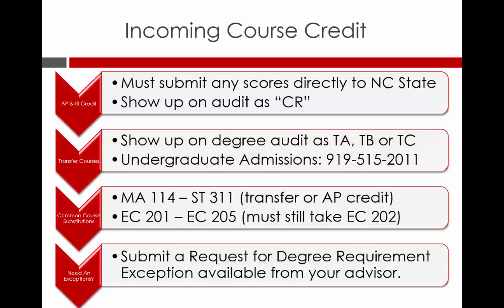You may have looked at your audit and thought that you have taken a course similar to one of our requirements but have not been given credit for it or it is not in the right place. In this case, you may submit a Request for Degree Requirement Exception so the incoming course can be evaluated to determine if it meets one of our requirements. You will need to attach the supporting documentation listed on the form, and you can submit your request in the advising office located in Suite 2150 of Nelson Hall or directly to your advisor via email.